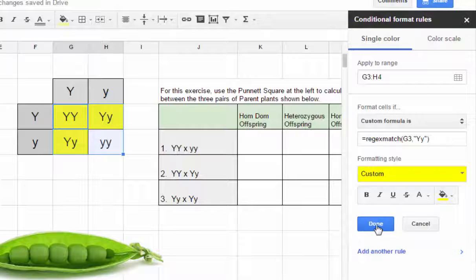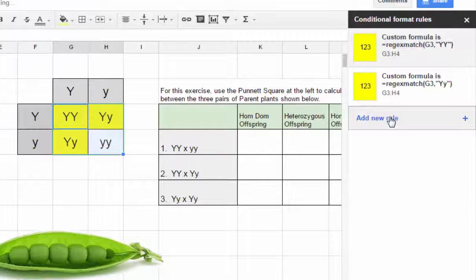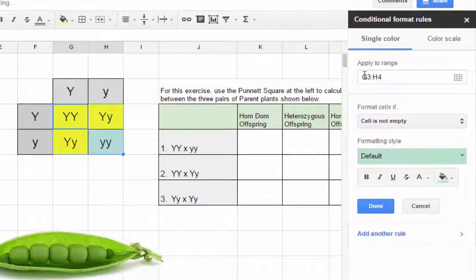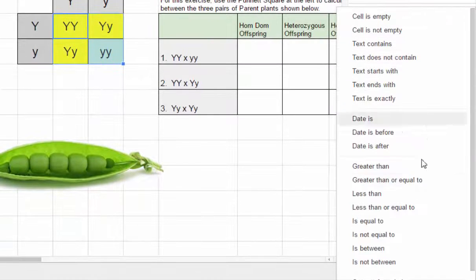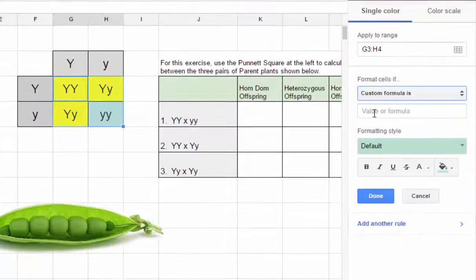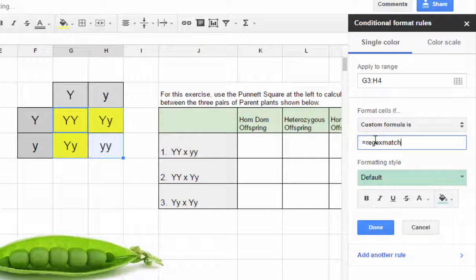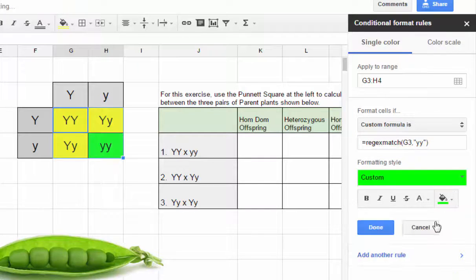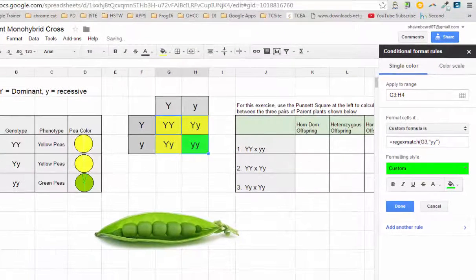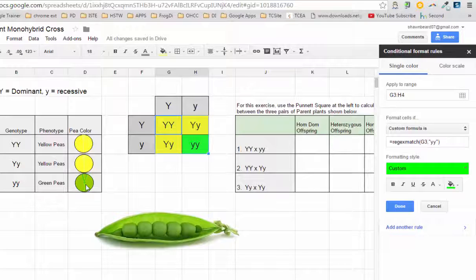We'll add our final rule. Again it's going to apply to that same range, custom formula is regular expression match, G3 will be our reference cell, open quotation marks, little y little y, close quotations, close parentheses. In this case we want this to be green because a homozygous recessive genotype will yield green, and we hit done.